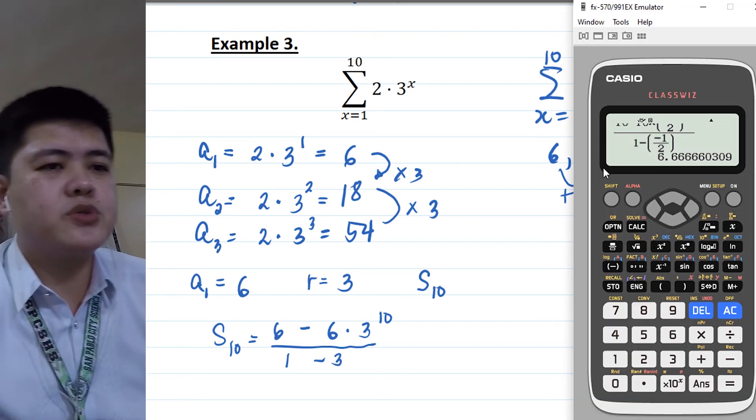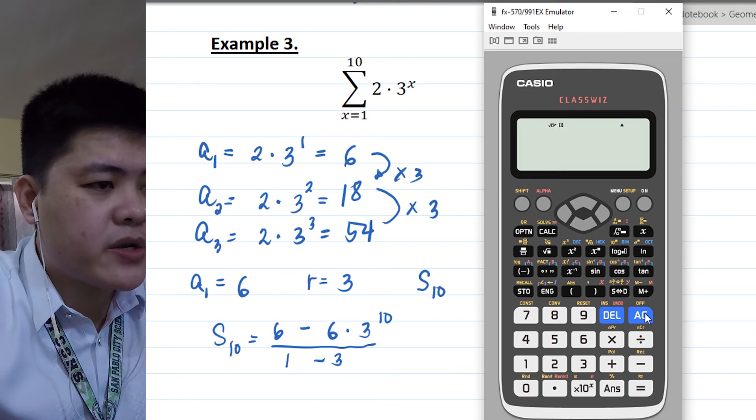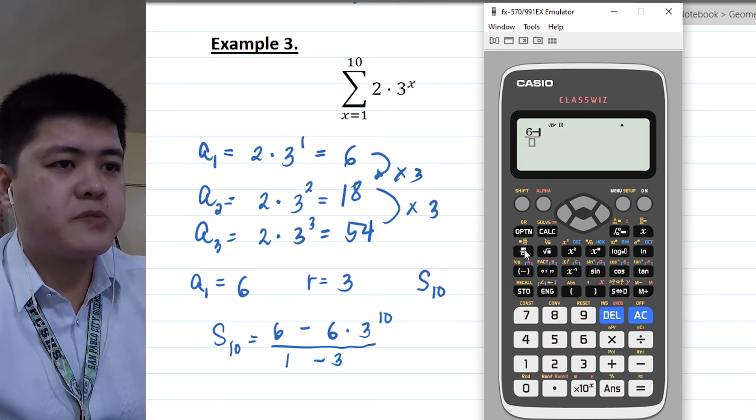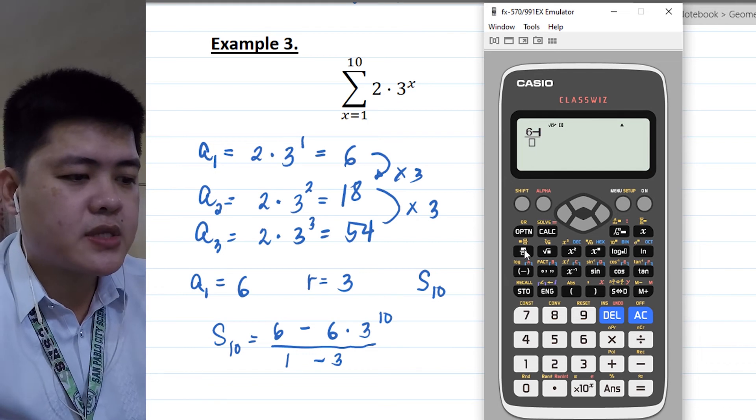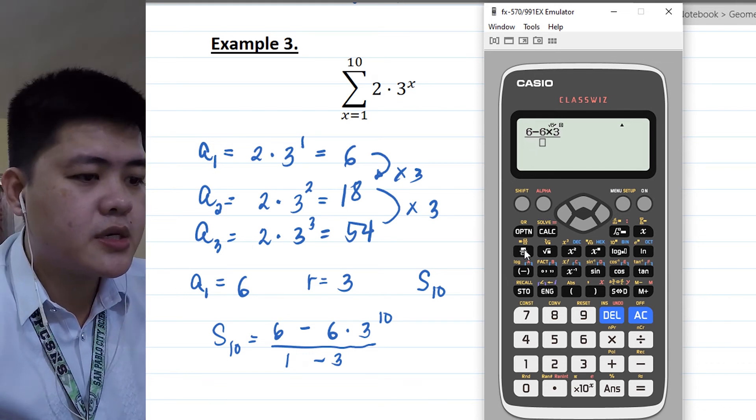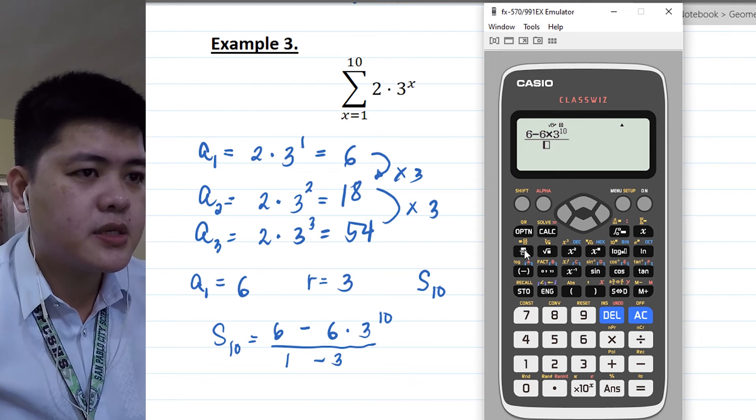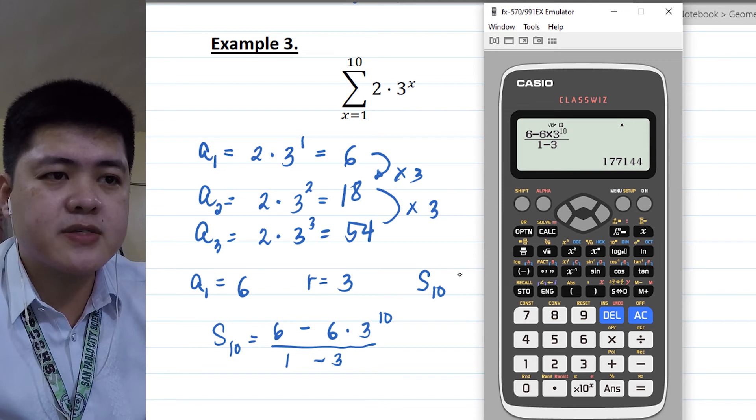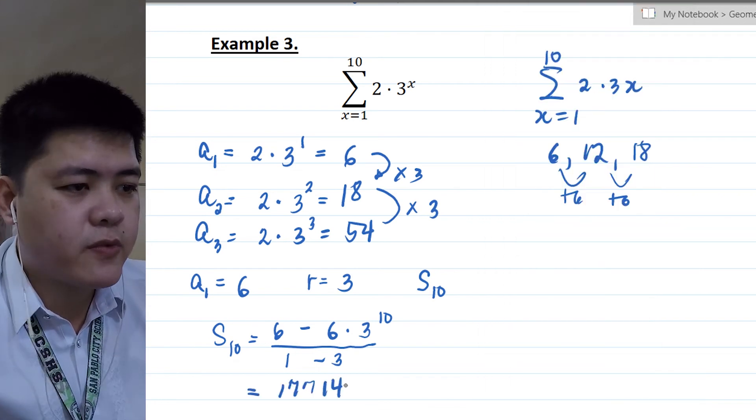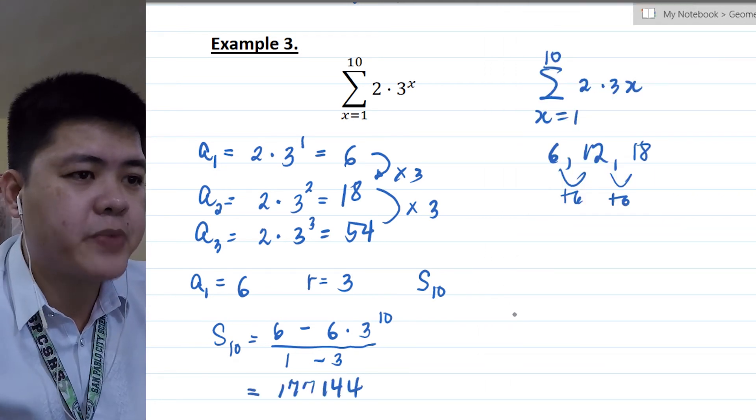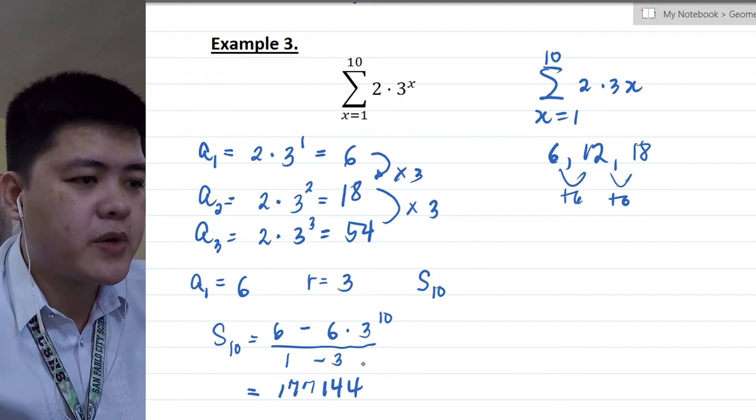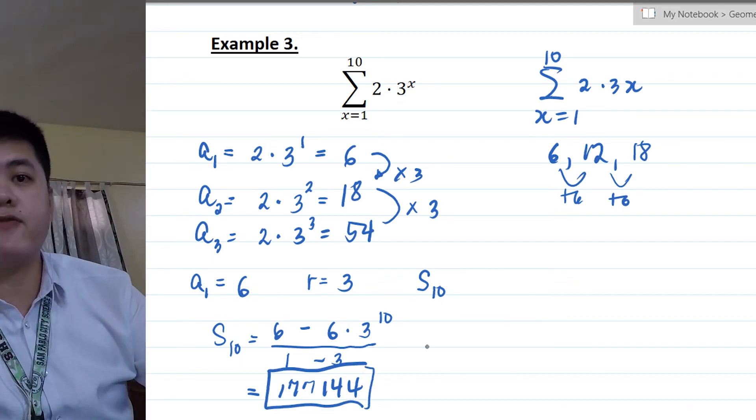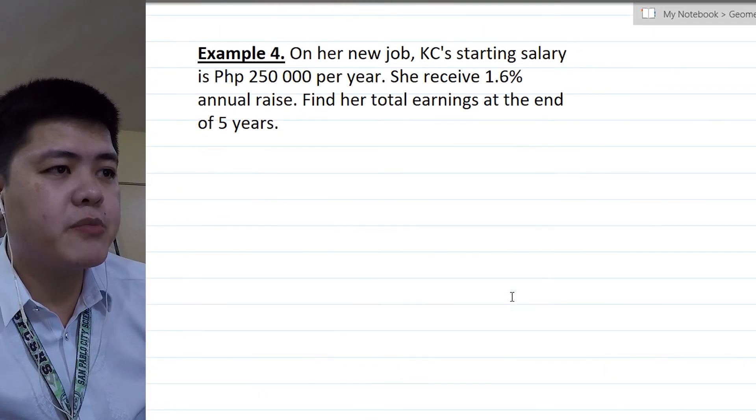Let's substitute. So it's 6 minus 6 times 3 raised to 10, divided by 1 minus 3. So the answer is 177,144. So therefore, this particular summation over here is equal to 177,144.